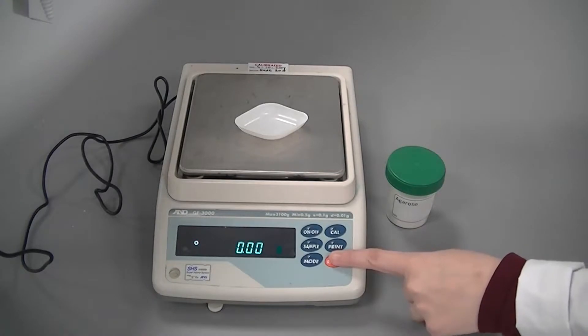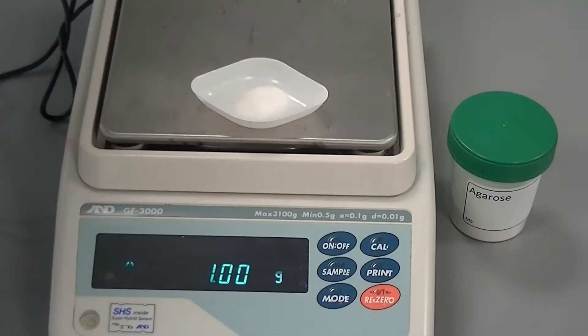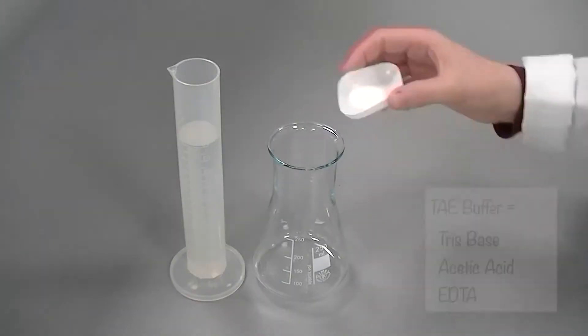Make sure you zero the scales before you start weighing. Measure out the required amount of agarose powder and volume of TAE buffer and add to the conical flask.